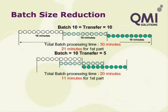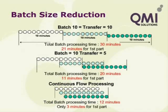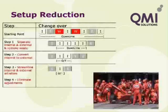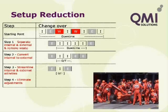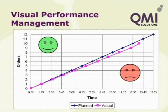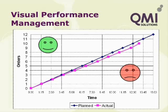Value stream mapping is a method of visualising the flow of value creation as well as the waste in a process. It helps to identify opportunities for improvement and communicate the vision for the future. Because the value stream map shows the flow of value, it can be used to identify the bottleneck process, which is where improvements should be focused. Planned improvements are shown in a future state map, showing the benefits of planned changes. For more information on value stream mapping, refer to the resources section at the end of this presentation.